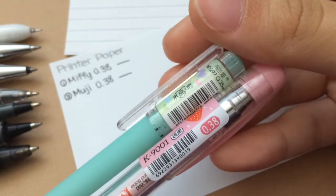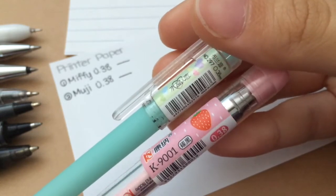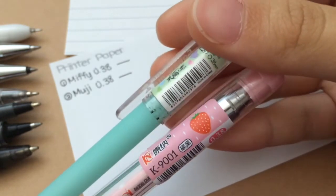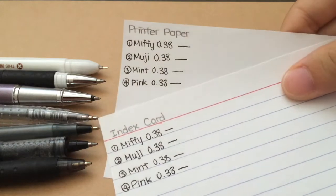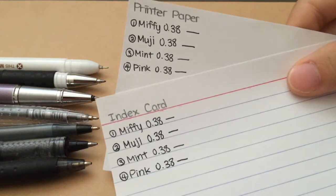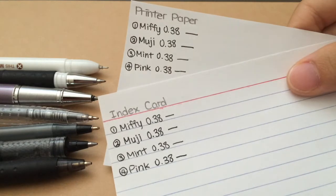Then I have these two also 0.38 pens but they are by different brands so let's see the difference. These 0.38 pens all perform kind of similar and my favorite is the Miffy and the Muji one.